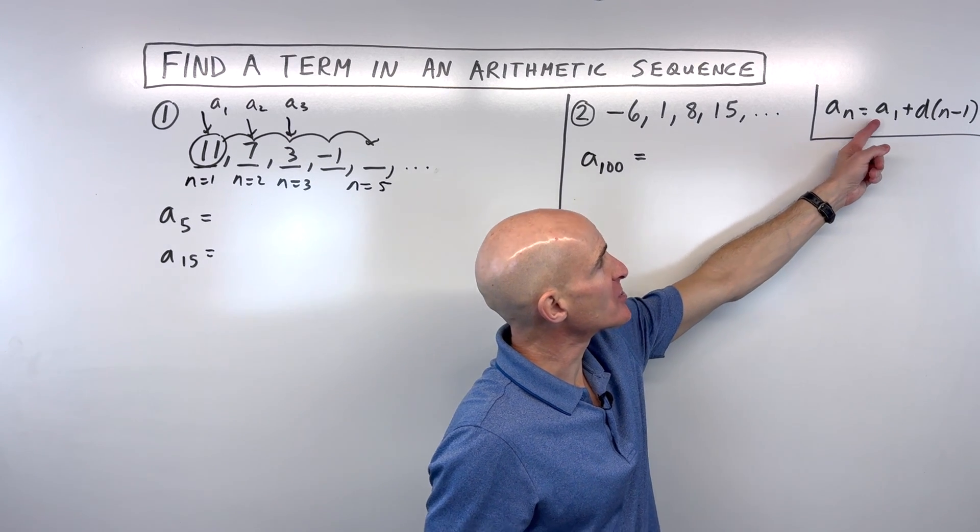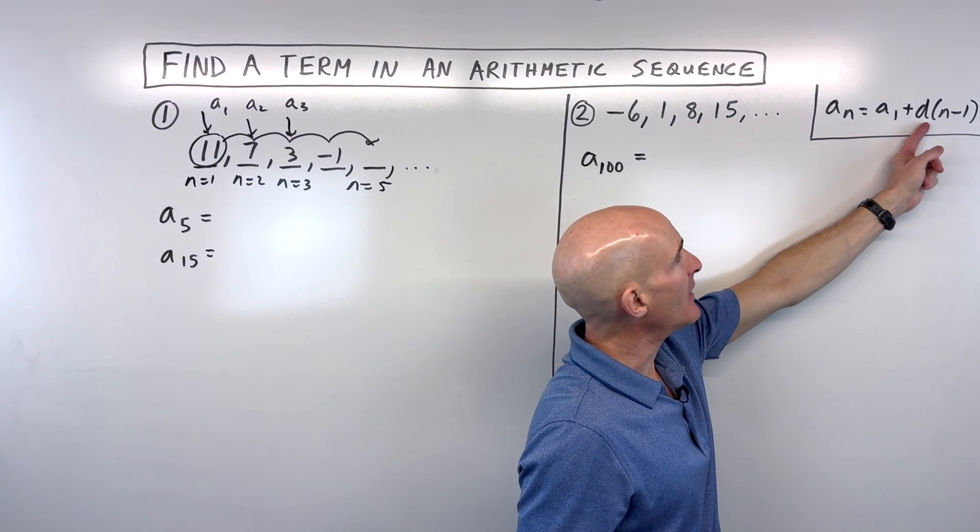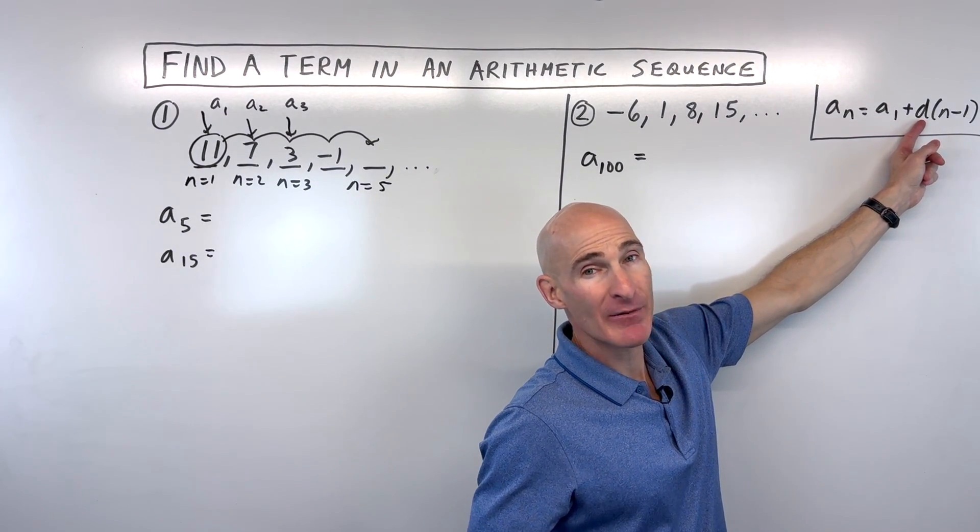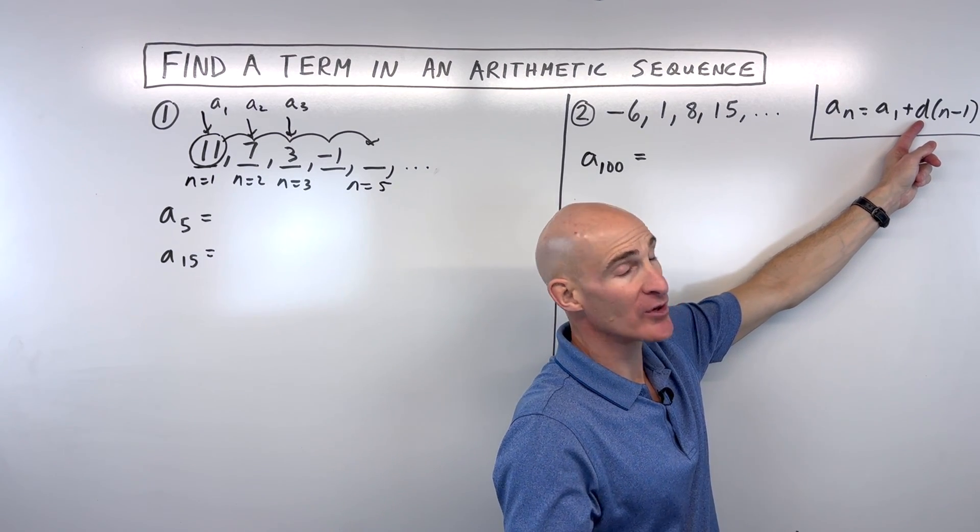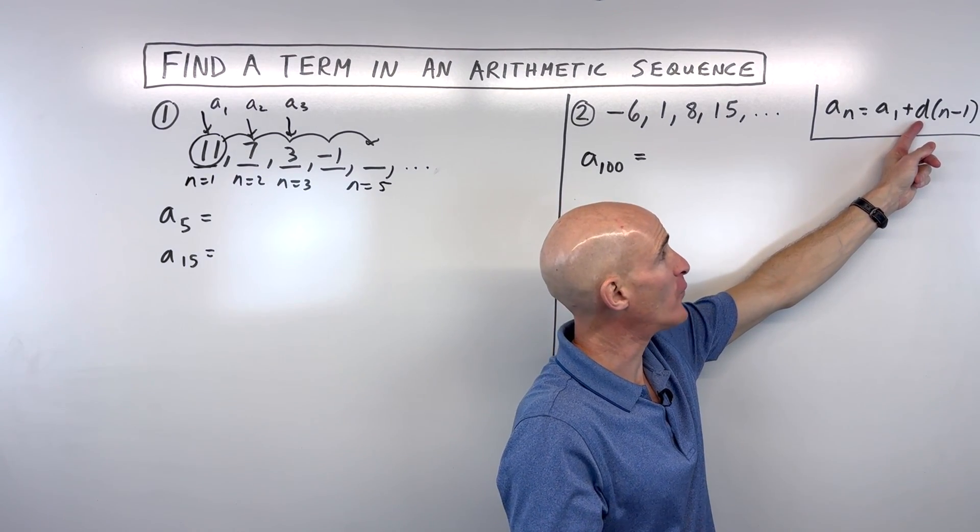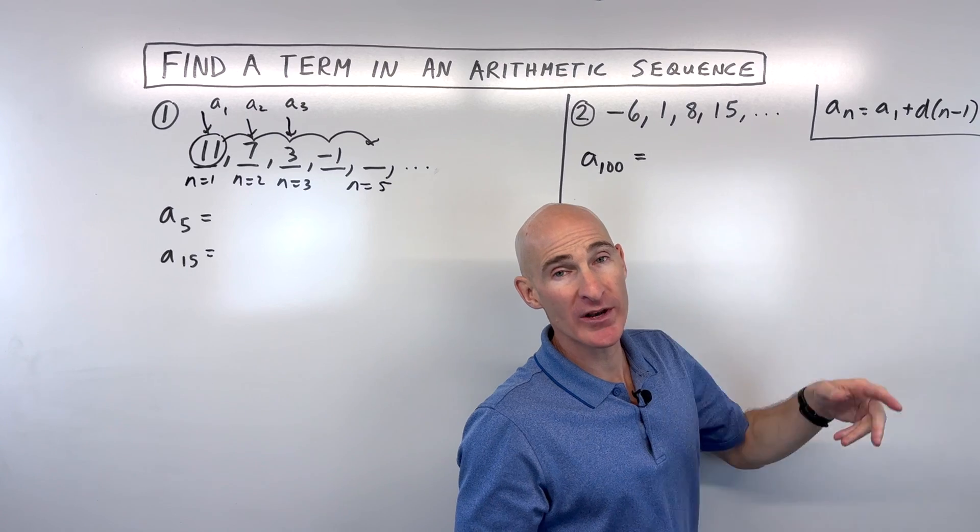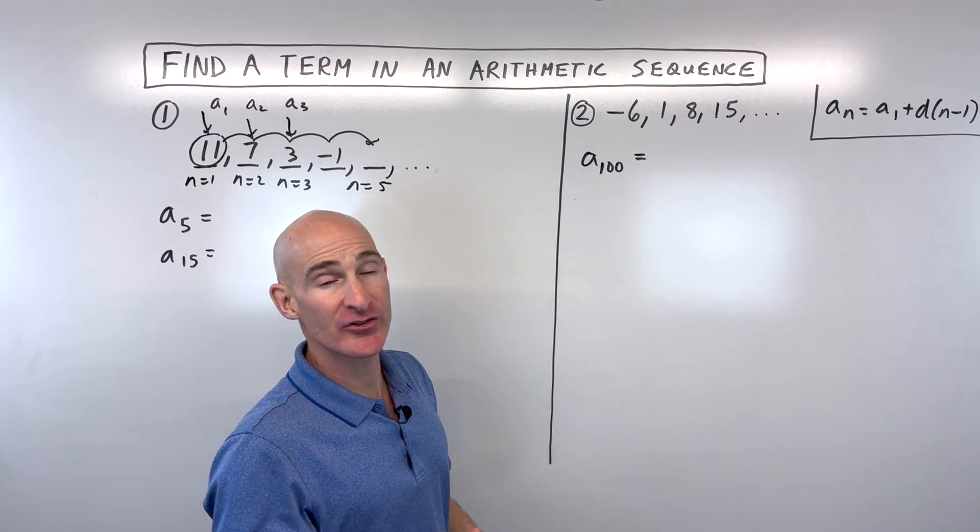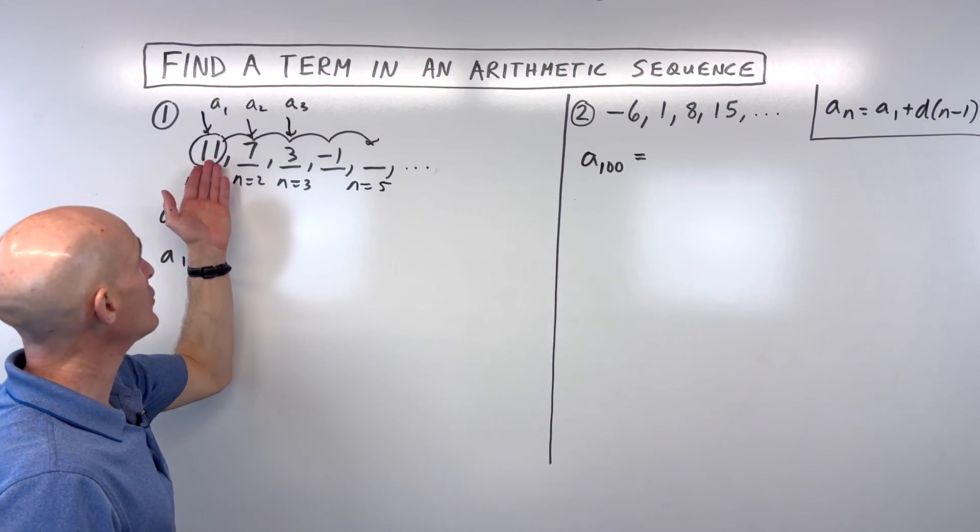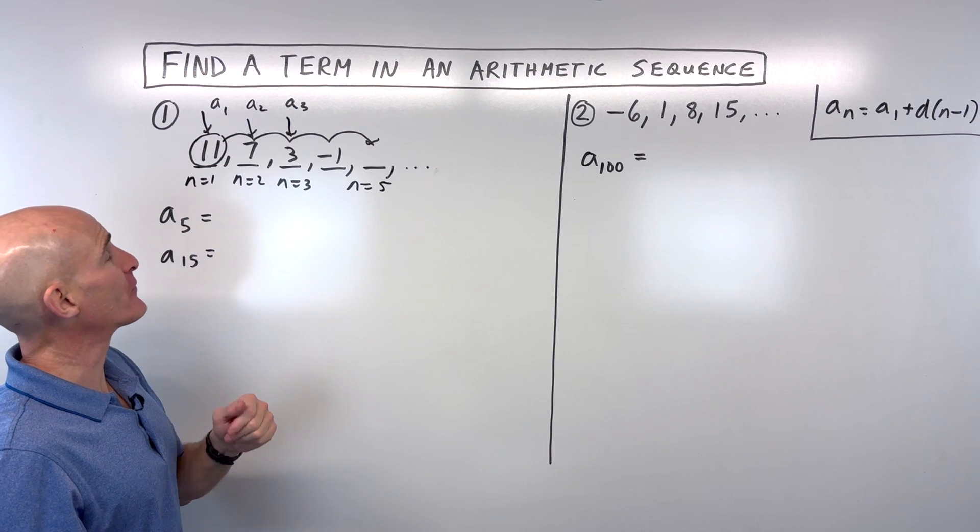And so that's where this formula comes from. We're starting at the first term, and then d represents the common difference, like in this case what we're doing to get to the next term. In this case we're subtracting 4, but it's n minus 1 times, one less time than the term that you want, because you already know what that first term is, you're already at that first term.